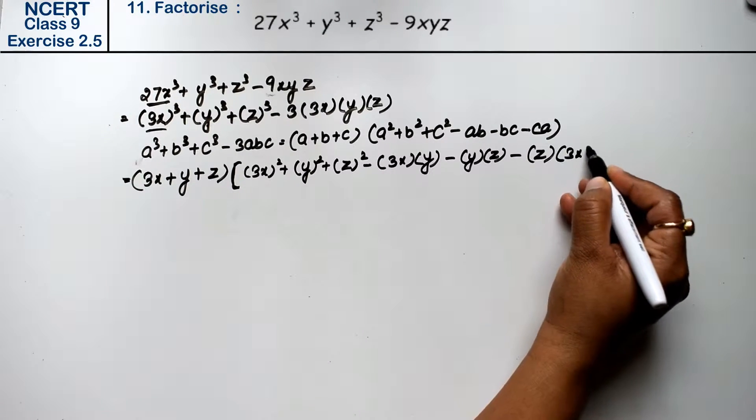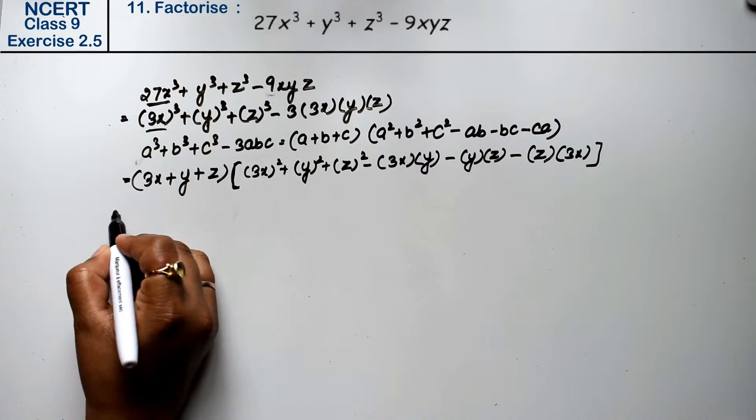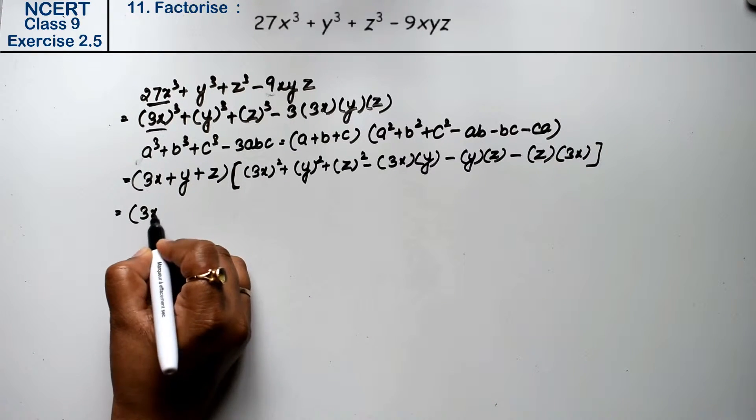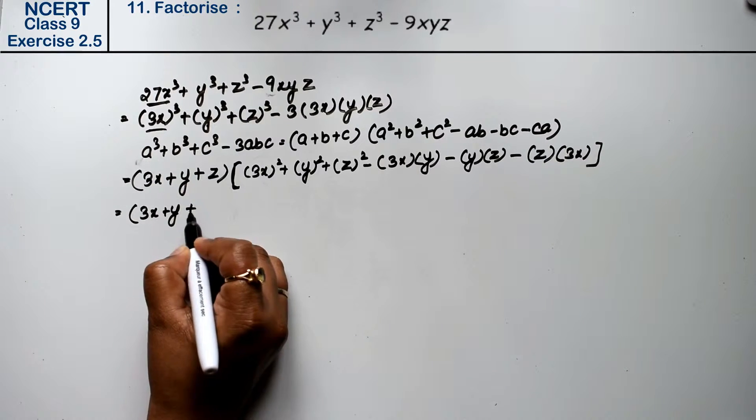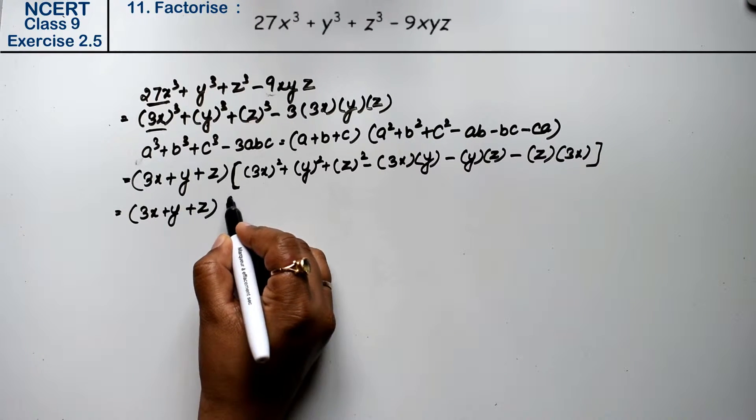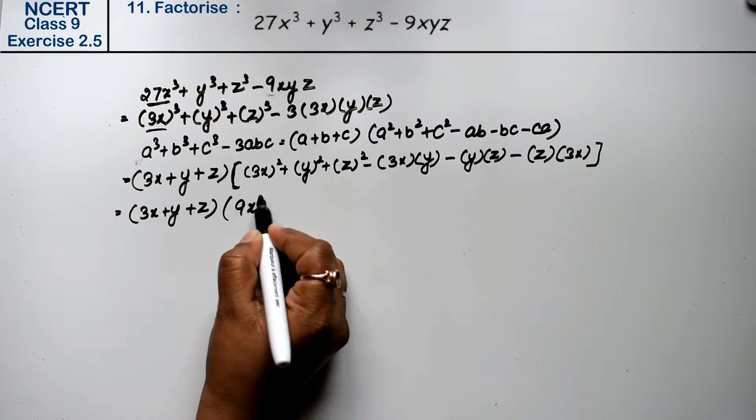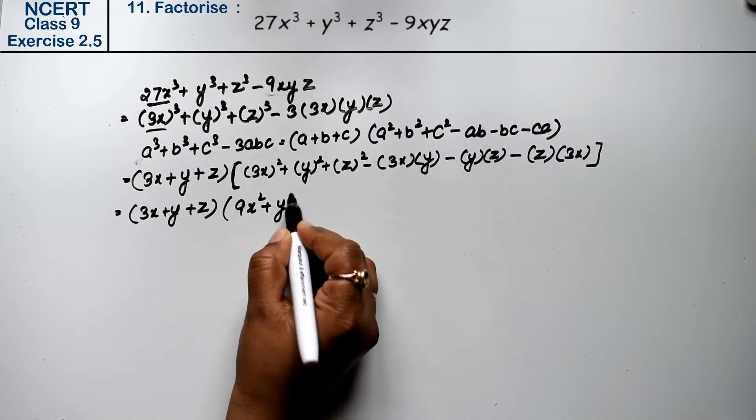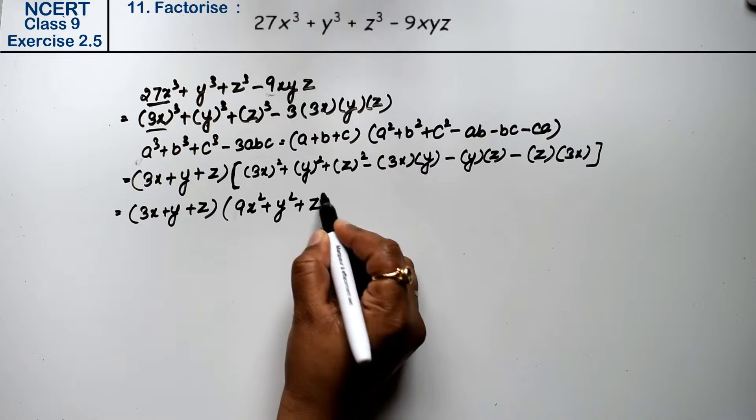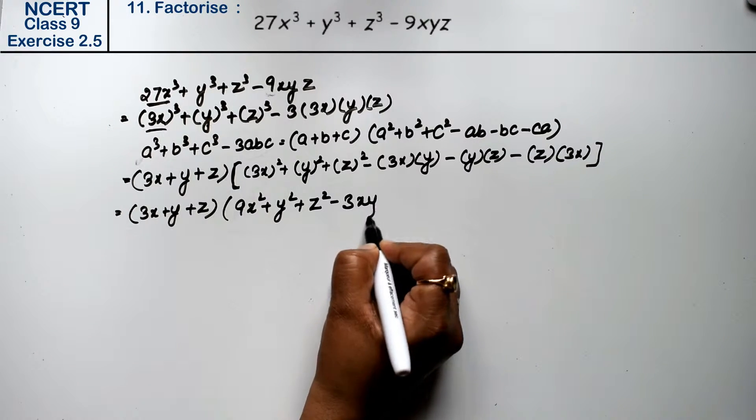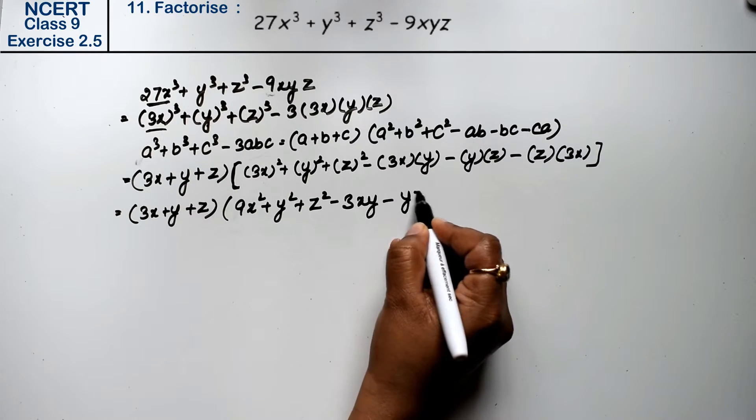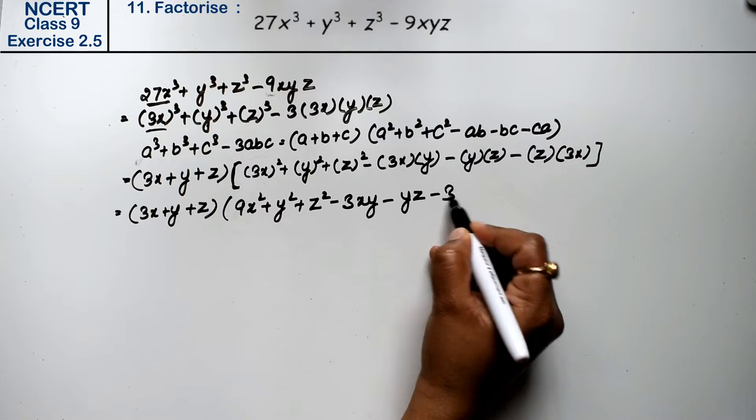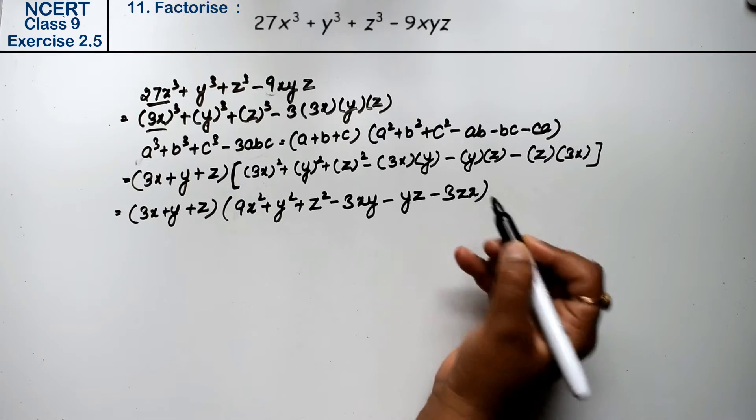into 3x. So you can see this is (3x + y + z)(9x² + y² + z² - 3xy - yz - 3zx). This is the answer.